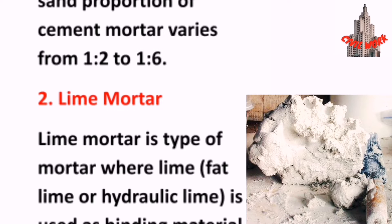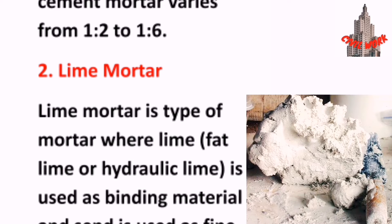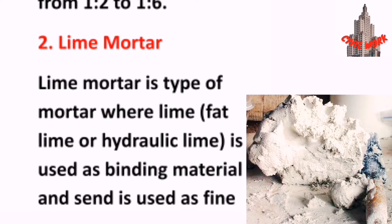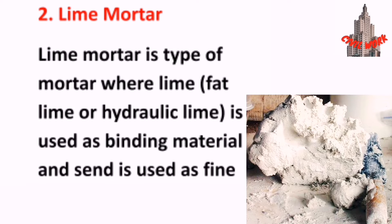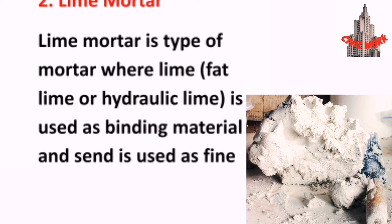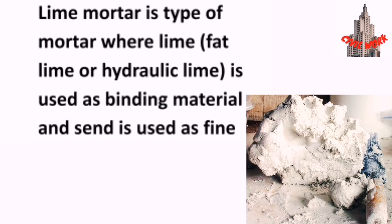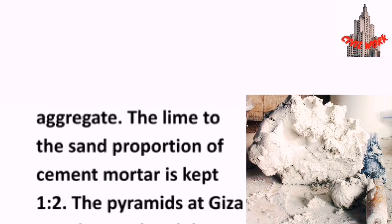Lime Mortar is a type of mortar where lime — fat lime or hydraulic lime — is used as binding material and sand is used as fine aggregate.